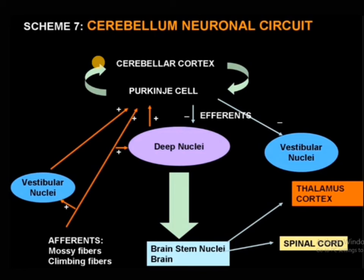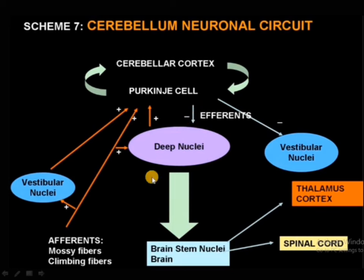The cerebellar cortex is connected with the Purkinje cells, and these Purkinje cells have afferent and efferent outputs through the deep nuclei and send connections and signals to the brain stem and nuclei. These Purkinje cells also receive inputs from vestibular nuclei as well as from mossy and climbing fibers.